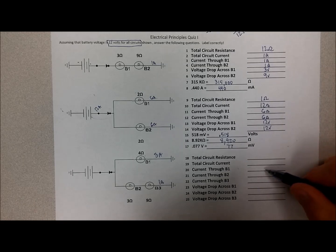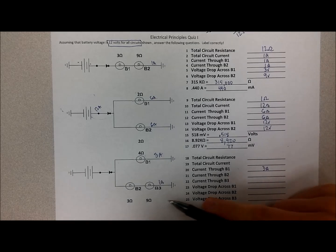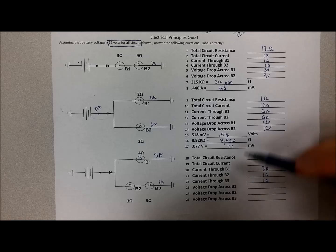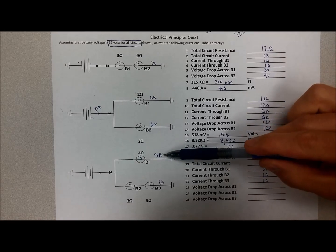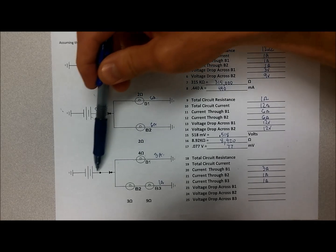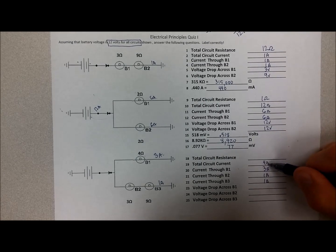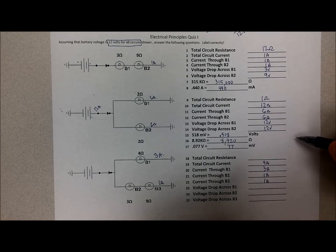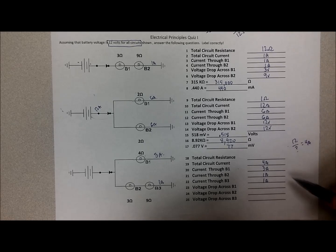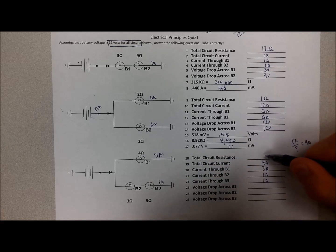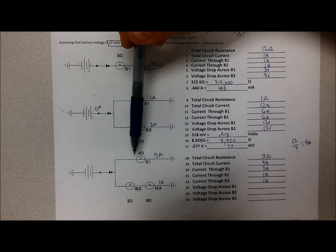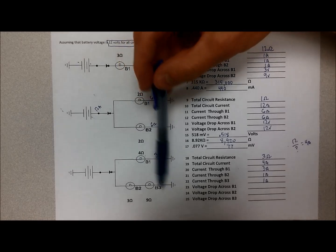So current through bulb 1, 3 amps, current through bulb 2, 1 amp, current through bulb 3 is 1 amp. Now it says what is the total current? Well we have 3 amps here and 1 amp here, so how much left the battery? Obviously 4 amps left the battery. If we have 4 amps flowing, we know that 12 divided by something equals 4 amps. If we have 4 amps flowing, it's got to be 3 ohms is the total circuit resistance. Does that make sense? It's smaller than the smaller resistor here because we have 4 ohms here and 12 here, so it's smaller than the 4.